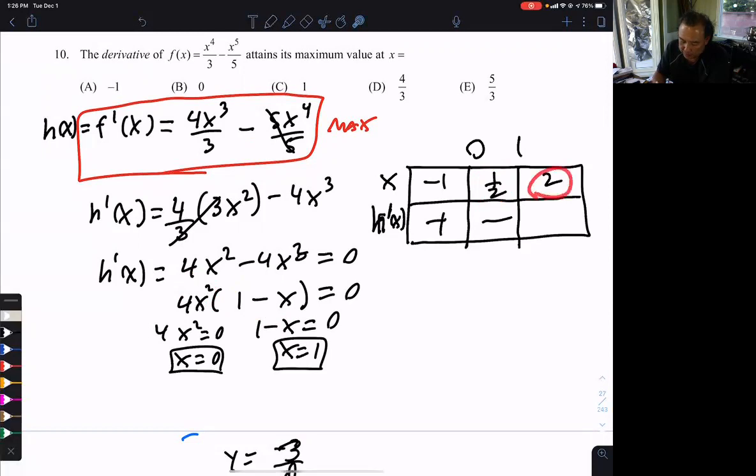Then let's plug in 2. That's always positive. 1 minus 2 is negative. A positive and a negative get me a negative. I am not happy with that. I messed up somewhere.